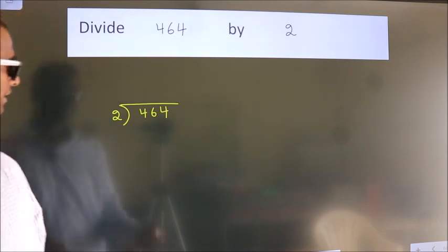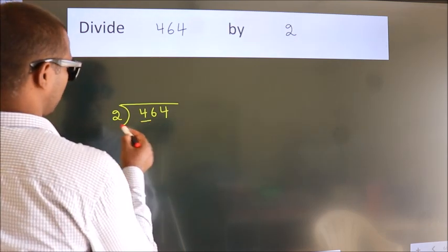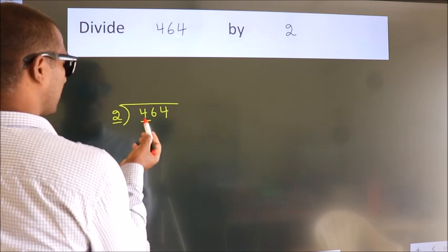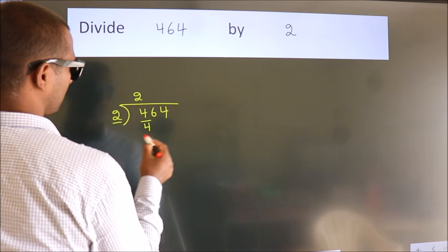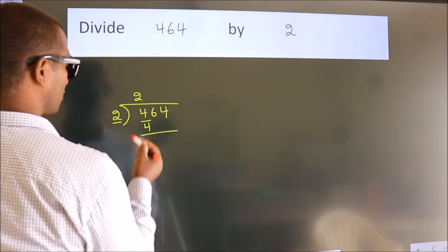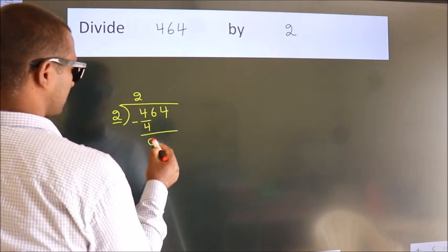Next, here we have 4, here 2. When do we get 4? In 2 table. 2 2's 4. Now we should subtract. We get 0.